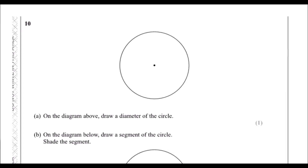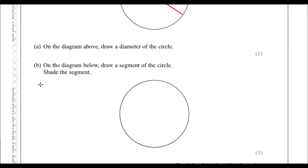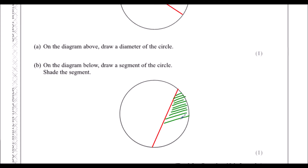Question 10: on the diagram, draw a diameter of the circle. A diameter is a line that goes from the circumference to the circumference — from edge to edge — and it goes through the centre. For the second part, draw and shade a segment of the circle. We draw a chord — a line from one side to the other that doesn't have to go through the centre — and the segment is the area made by drawing that chord.